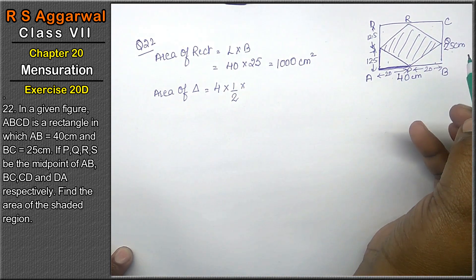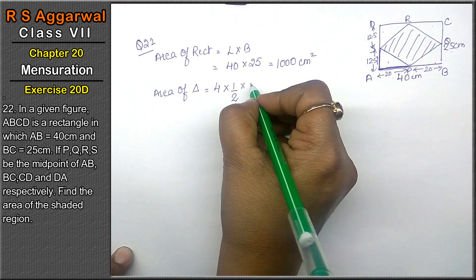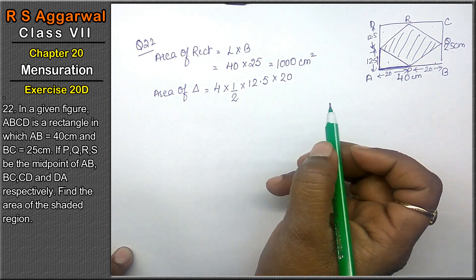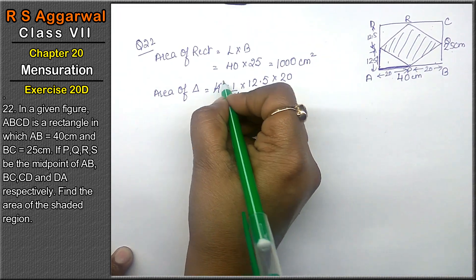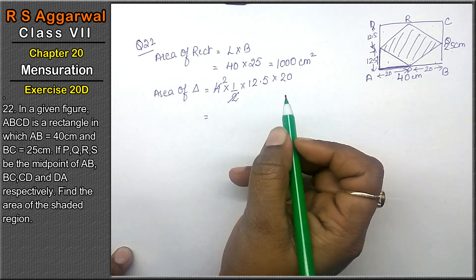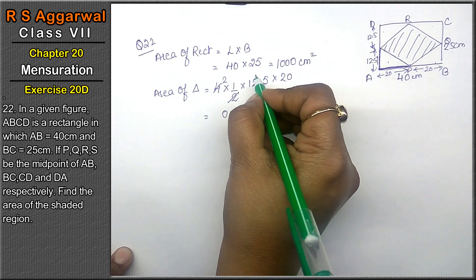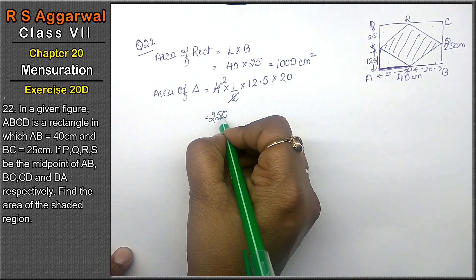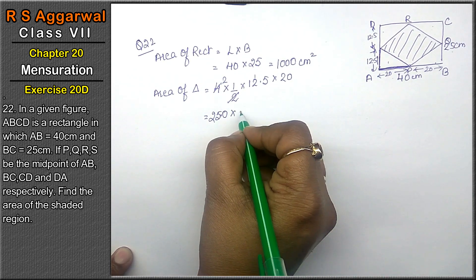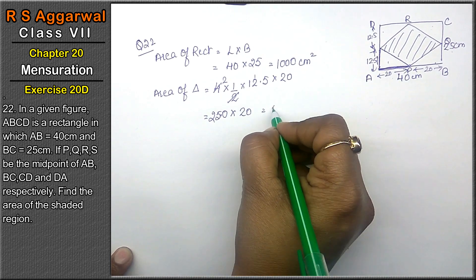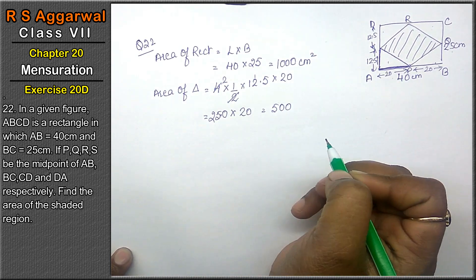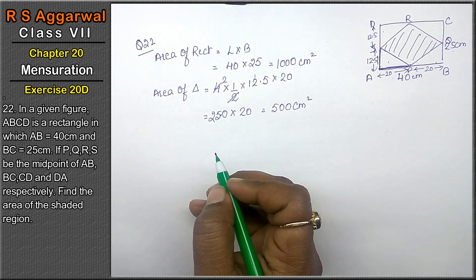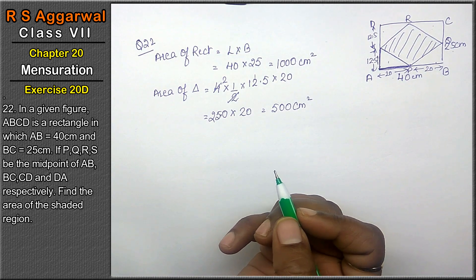Taking base as 12.5 and height as 20, area of each triangle equals half into base into height. Half into 12.5 into 20 equals 125. Total area of the four triangles is 500 centimeters square.